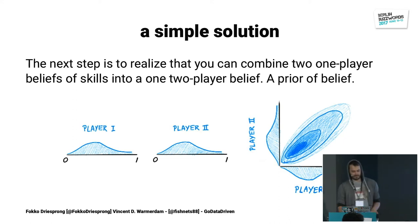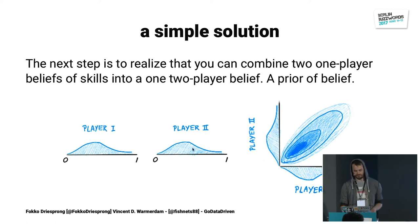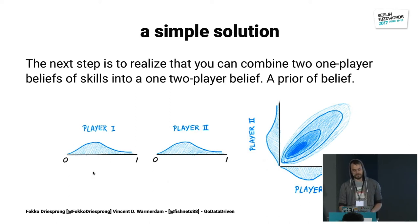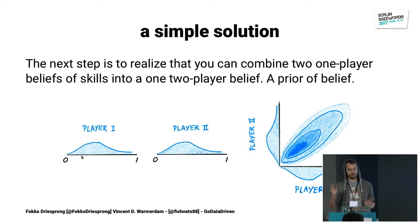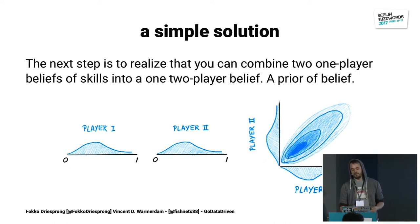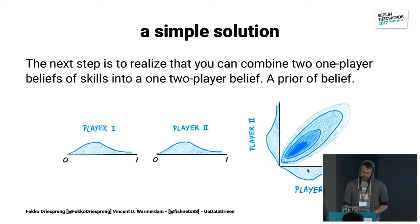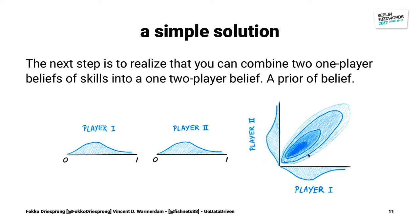Let's think about what happens if two players battle each other. Here's a distribution for player one and a distribution for player two — separate one-dimensional distributions of skill. Instead of two separate one-dimensional distributions, we can combine them bluntly into one two-dimensional distribution. This is the belief of where the skill of both players might be — like a 3D histogram.